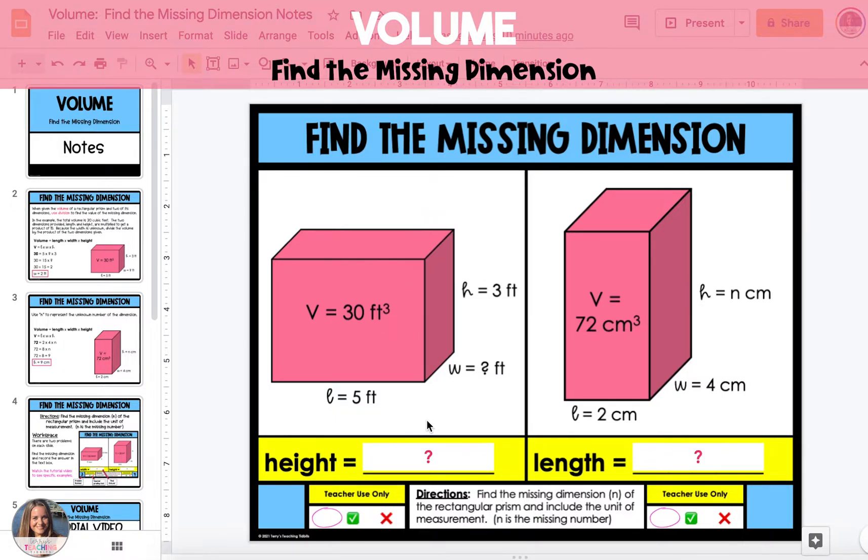And to find n, divide 30 by 15. When you do this, the missing number n is equal to 2. So the width of the figure is 2 feet.